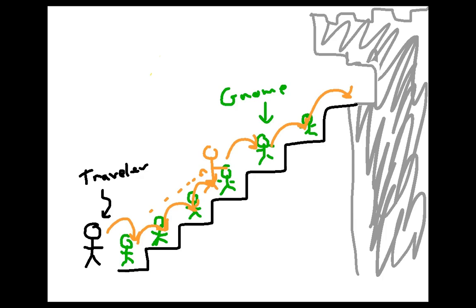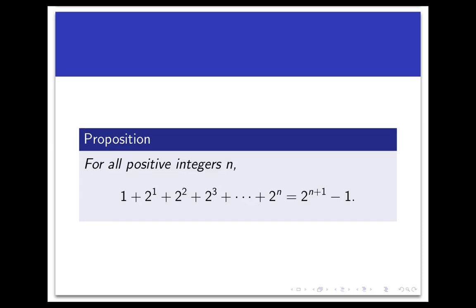Now let's see what this story has to do with math by looking at a new proposition. The proposition says that for all positive integers n, the sum 1 + 2^1 + 2^2 + 2^3 and so on, all the way up to 2^n, is equal to 2^(n+1) - 1. So in other words, if you take the sum of 1 plus a bunch of powers of 2 in sequence, you get the next power of 2 minus 1.